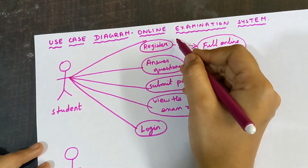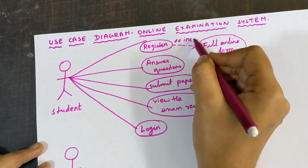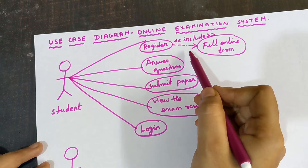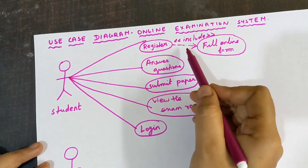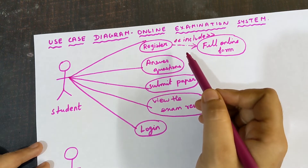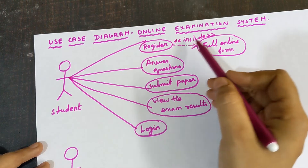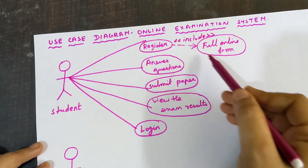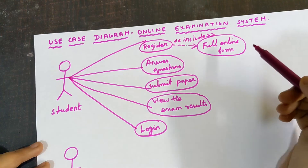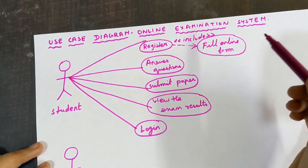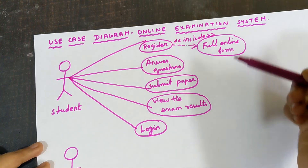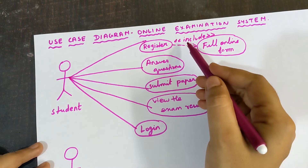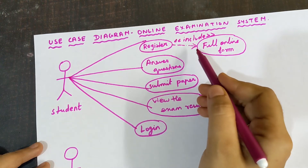On the dotted arrow line I write «include» inside double angle brackets. I am using include here because filling the online form is mandatory for registration — it is compulsory. You must fill the online form; only then can you proceed with the next steps. That is why I have used include here. This dotted arrow line is called a stereotype.